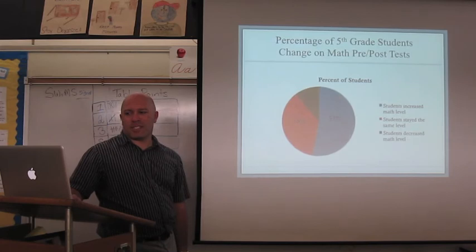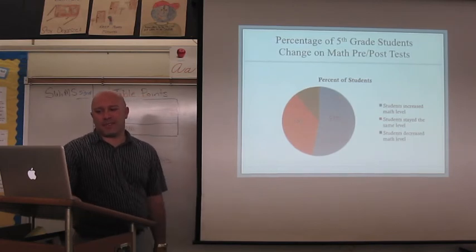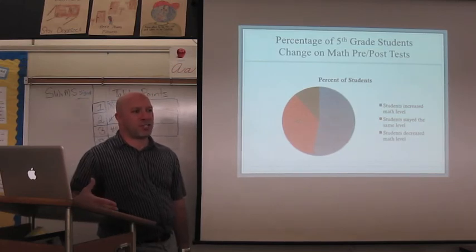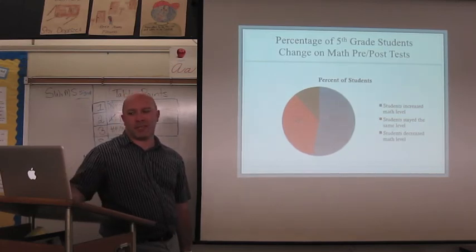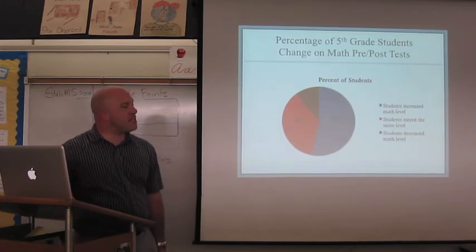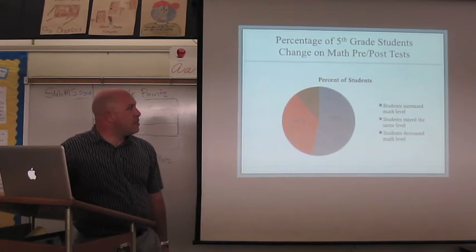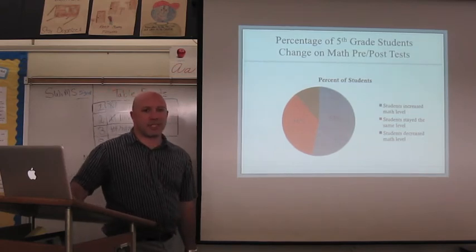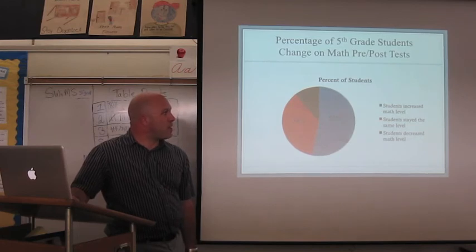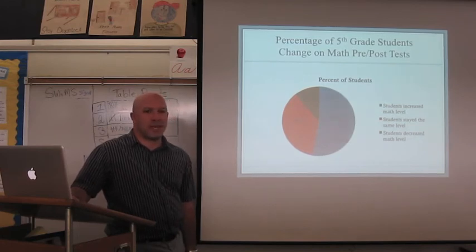Some of the students individual change on the tests. 53% of the students did increase their math level. So meaning if they were partially proficient they went up to proficient. So they did increase the level from the pre-test to the post-test. 36% stayed the same level. And 11% actually decreased. They went down from the pre-test to the post-test. So about half the students did make gains academically.